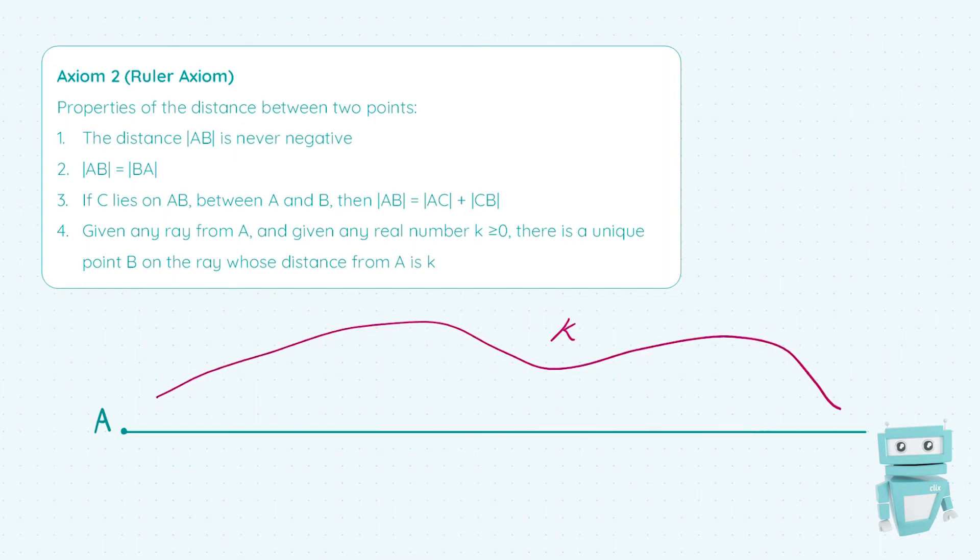regardless of what this length is, which we'll call k, we can always say that B is the endpoint of the line. So no matter how big we choose k to be, there is this unique point B whose distance from A is k.